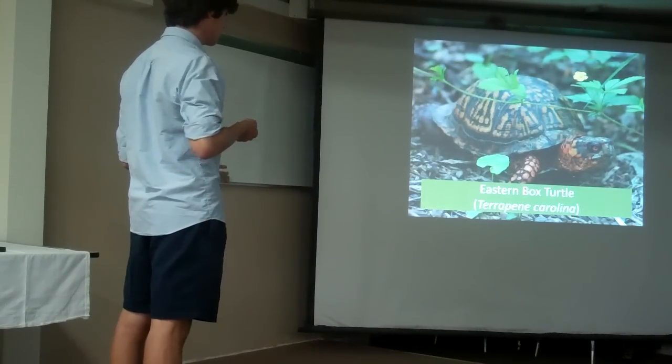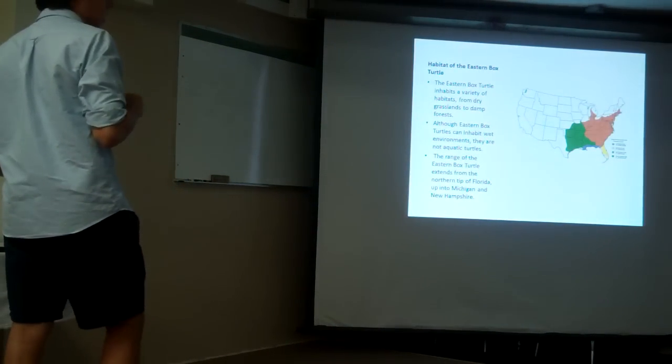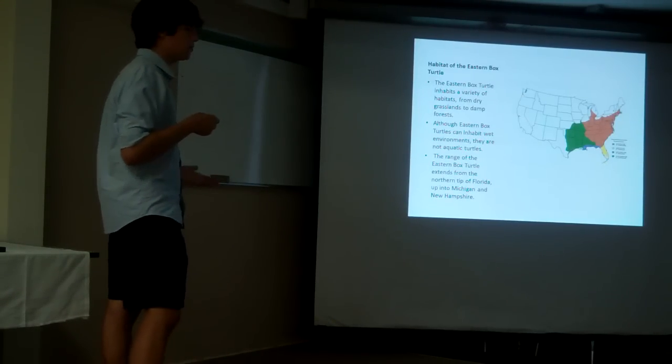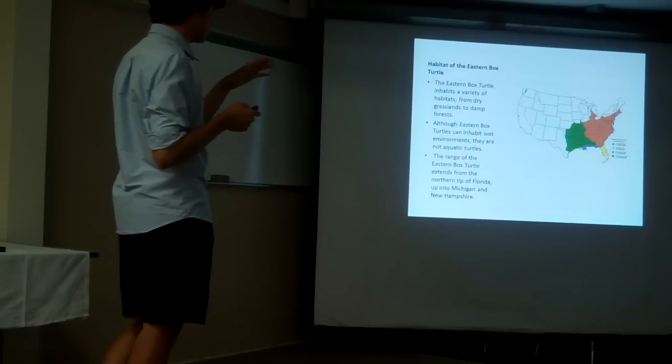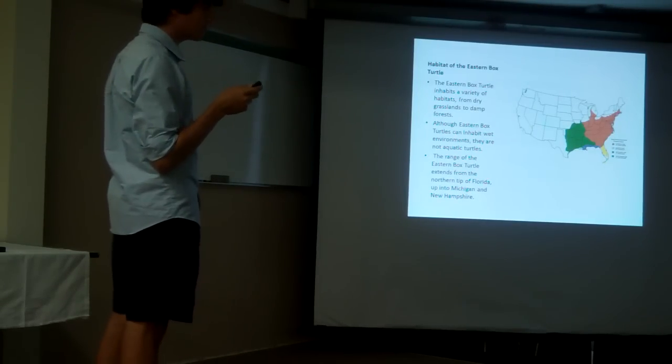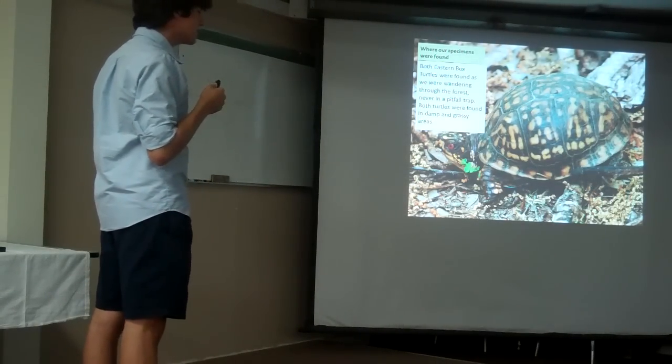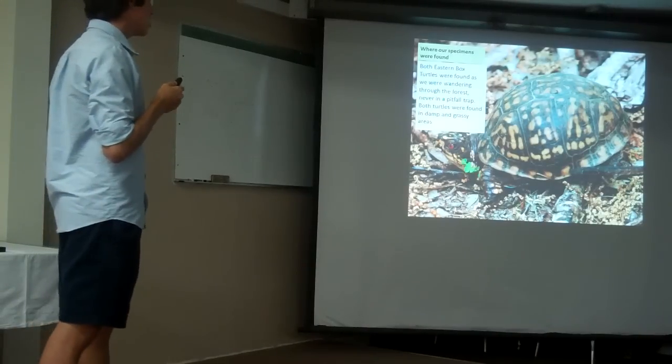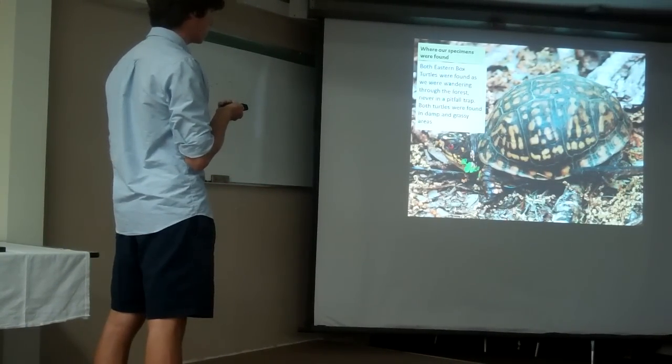One of the organisms we caught was the eastern box turtle. The habitat of the eastern box turtle can vary from dry grasslands to damp forests. However, they are terrestrial turtles and do not go in the water. As you can see, the orange is the range of the eastern box turtle. Fun fact, it's the state reptile of North Carolina. We actually didn't catch them in our traps, we found them while digging our traps. They were found in damp and grassy areas, like the areas we set up for herpareis one and two.